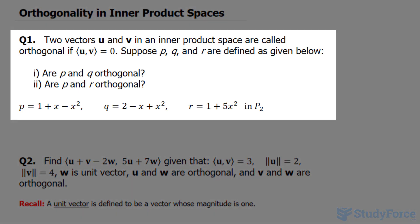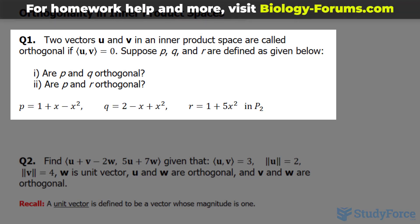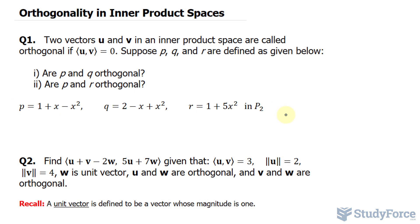The first question reads: two vectors u and v in an inner product space are called orthogonal if the inner product of u and v is equal to zero. Suppose p, q, and r are defined as given below. Take a look, they are quadratics.